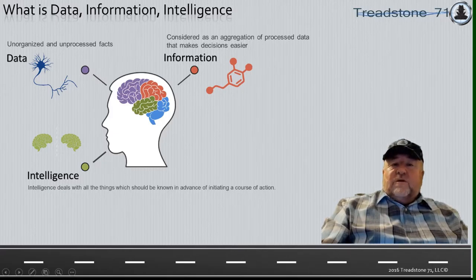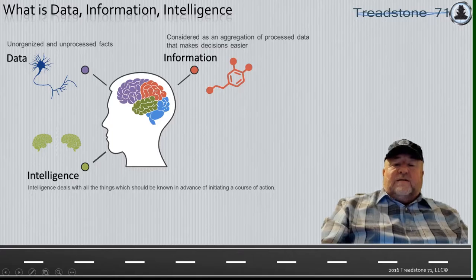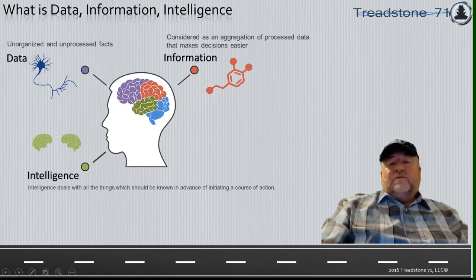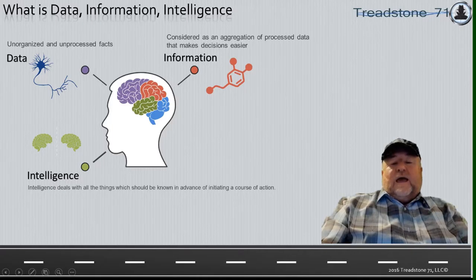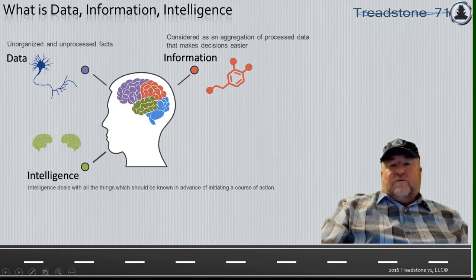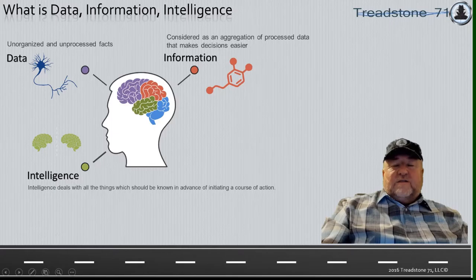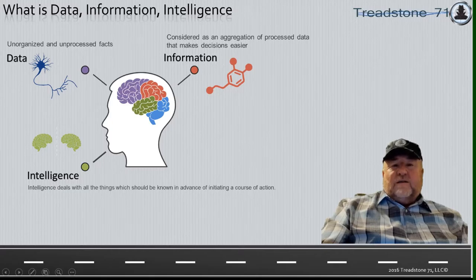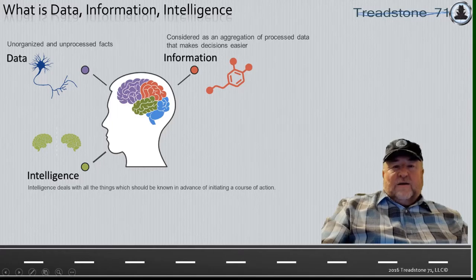Intelligence, when we reduce it to its simplest terms, is knowledge and foreknowledge of the world around us and the prelude to decision and action by organizational stakeholders. There is a process to get to this. Understand what data is as compared to information as we're struggling to move this into something that is actionable, that can be used by decision makers and stakeholders in your leadership, and that in fact is what we're after, and it's called intelligence.